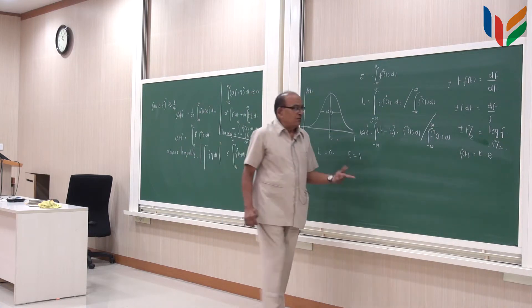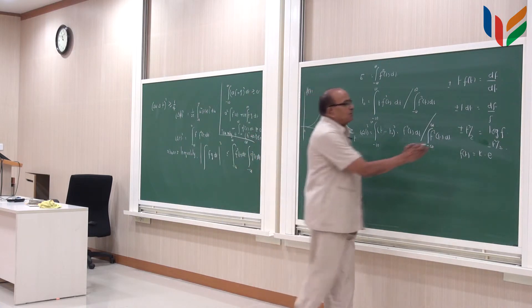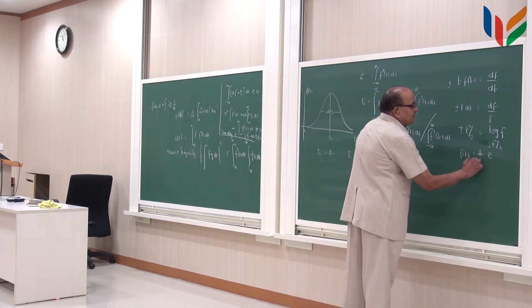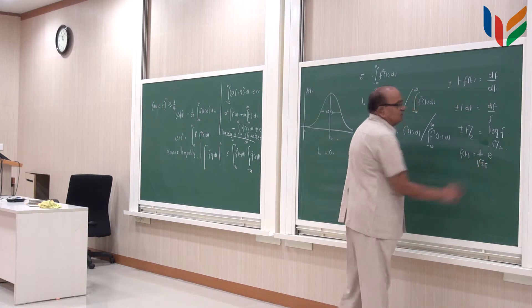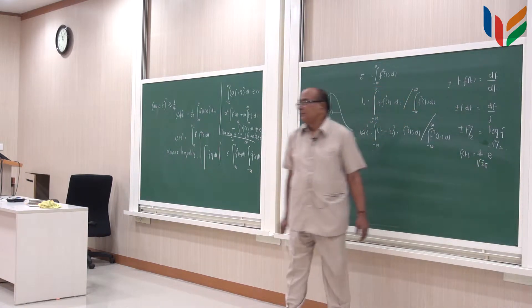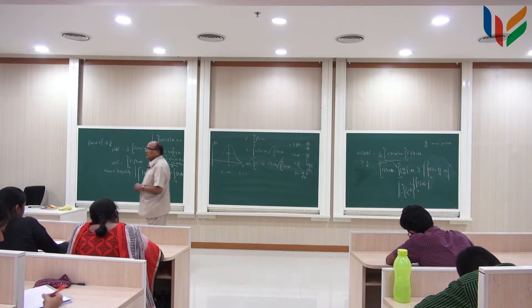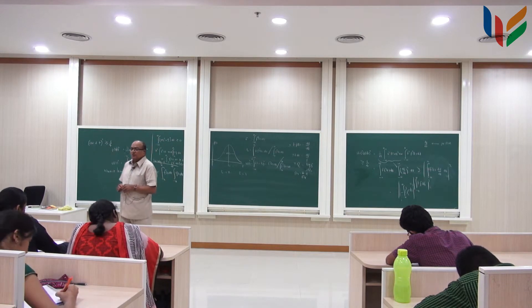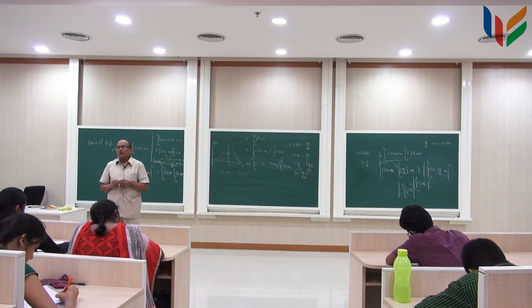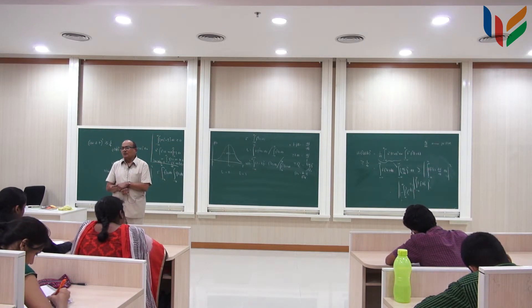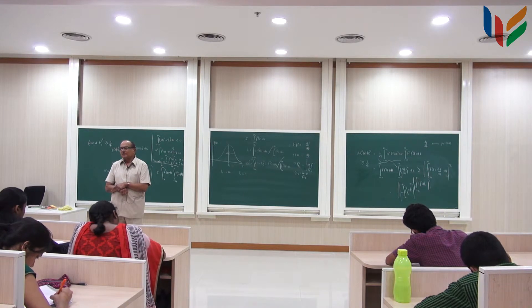So this will be equal to 1 over square root of 2π — that is what the constant must equal. So this is the function which has the minimum width both in the frequency domain as well as in the time domain.